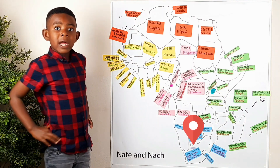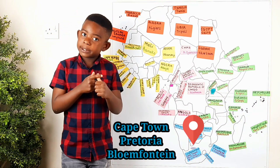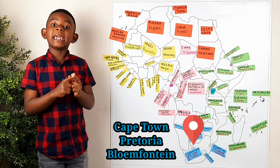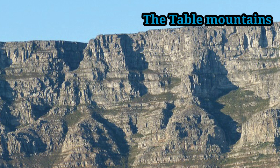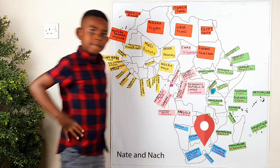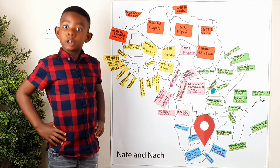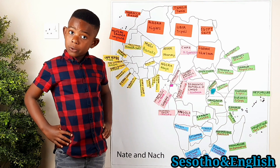South Africa has three capitals: Cape Town, Pretoria, and Bloemfontein. We've got the Table Mountain in South Africa as well. The capital of Lesotho is Maseru and its main language is Sesotho.